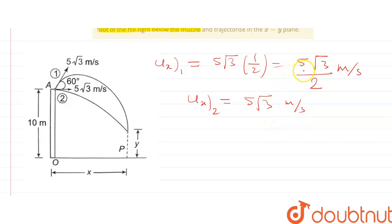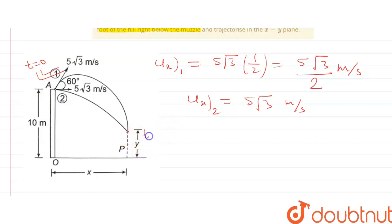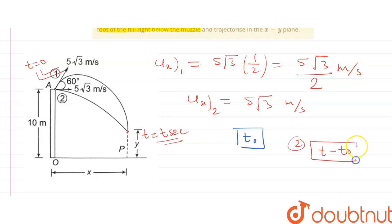From this we can see that shot one is slower in the x-direction and shot two is faster. So we conclude that shot one, fired at 60 degrees with the horizontal, is fired first. Let's say it is fired at t = 0, and at t = t seconds it collides with the second shot. Let the time interval between the two shots fired be t0. The time of flight for the second shot is (t − t0), and for the first shot it is t.